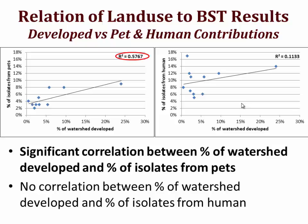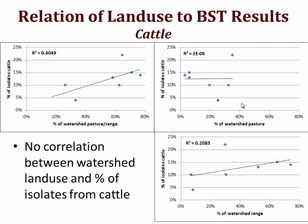Even removing one outlier, we still had an R-squared value of .54, which was a significant correlation. I was surprised to see that we didn't really see any correlation between the percent of isolates from humans and the percent of the watershed developed, but there could be many other factors — the number of septic systems, the number of wastewater treatment plant discharges, and so forth. And looking at land use versus cattle, I thought this was going to be a significant correlation, but it turns out it isn't statistically significant.